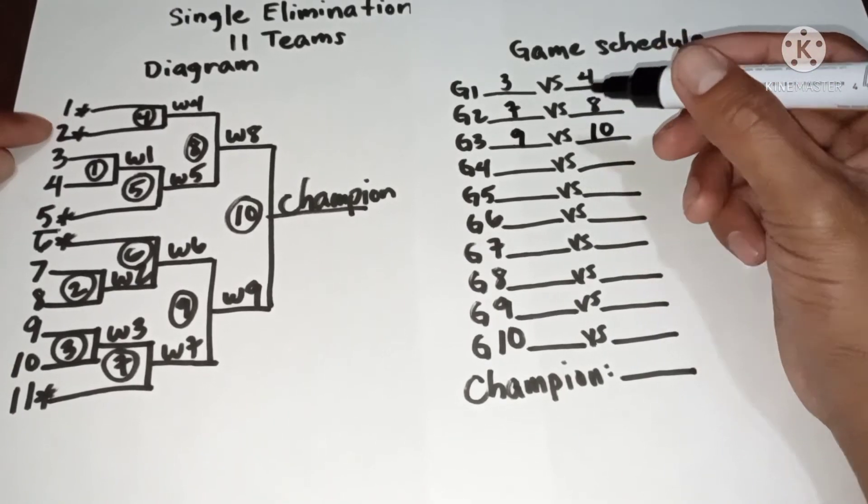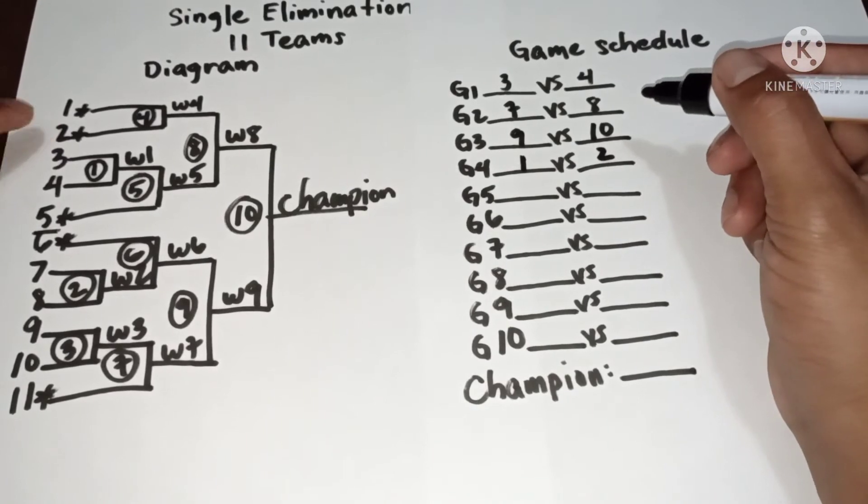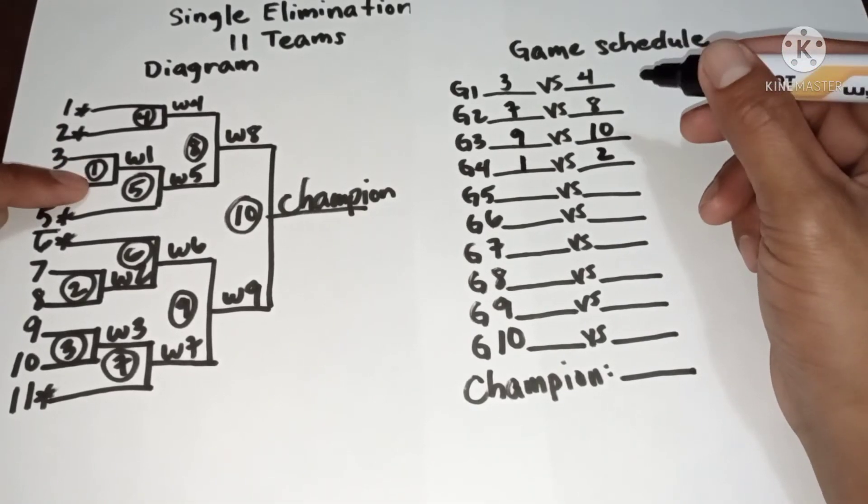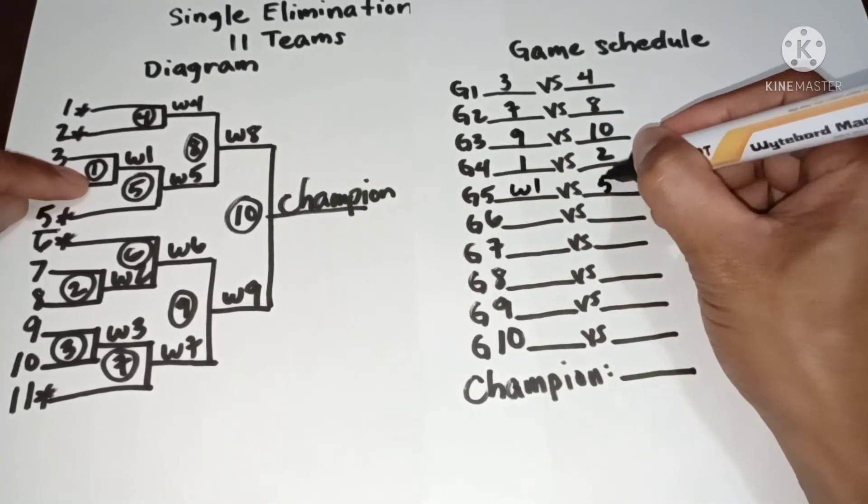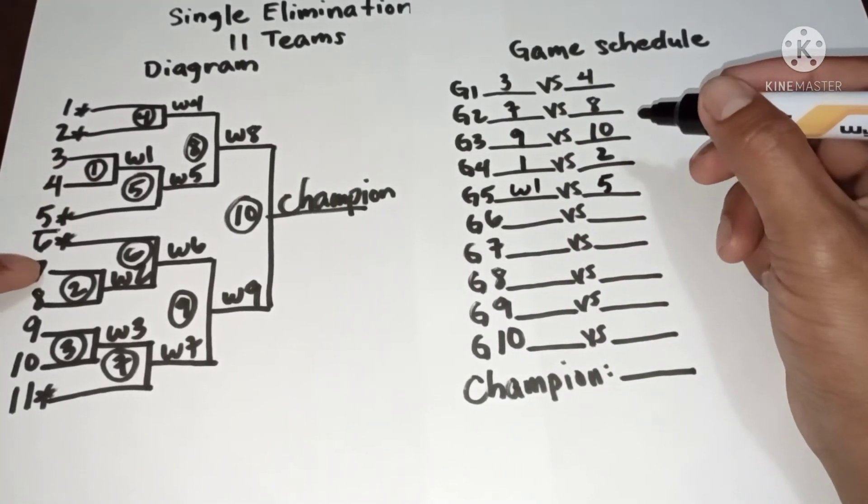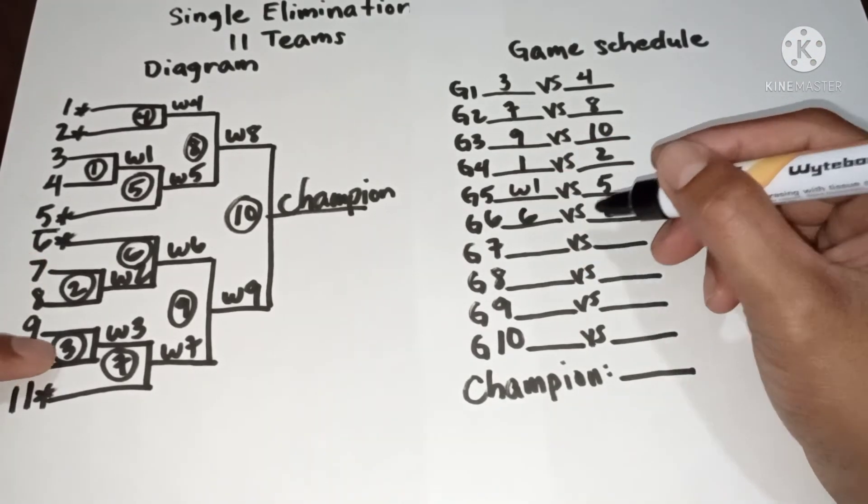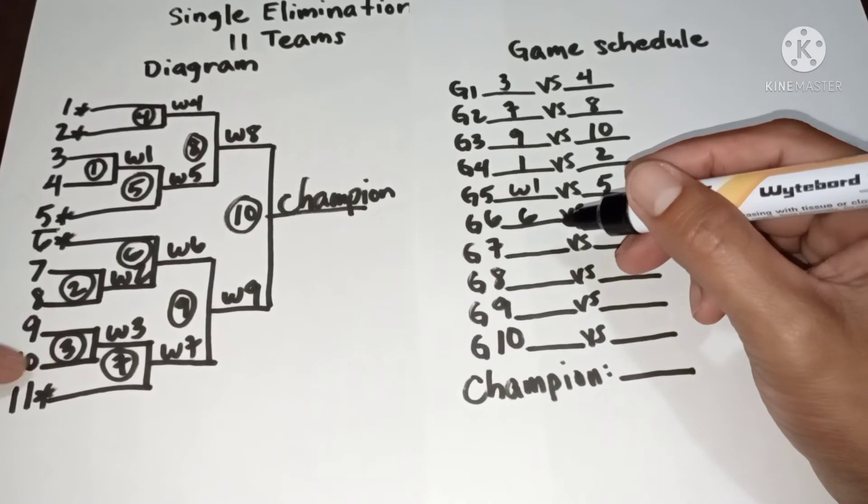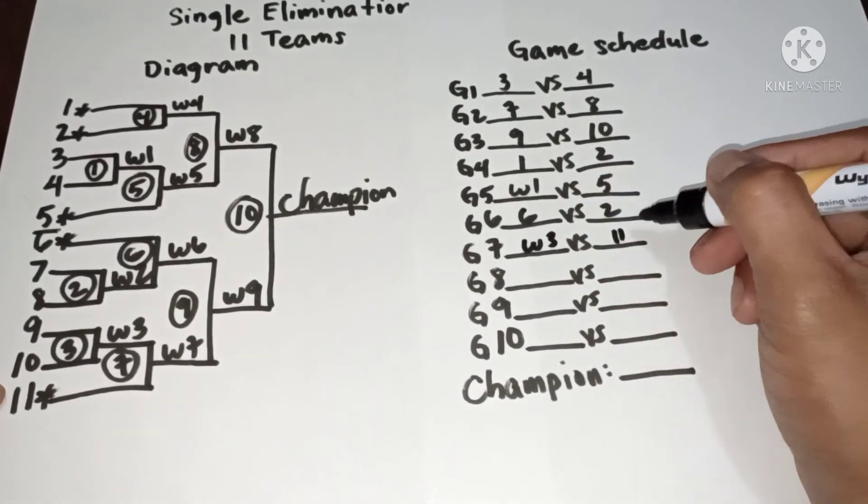In game 4, we have 1 versus 2. In game 5, we have winner 1 versus 5. In game 6, we have 6 versus winner 2. In game 7, we have winner 3 versus 11.